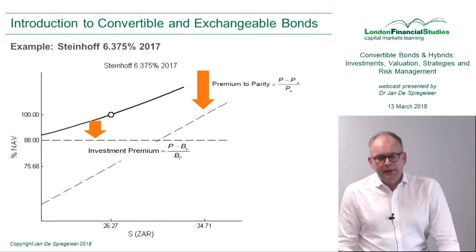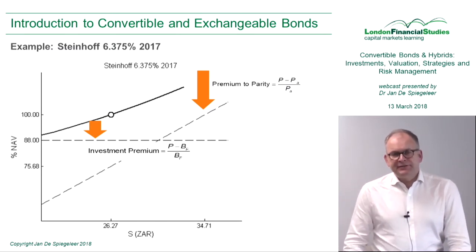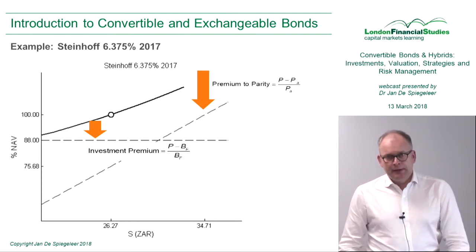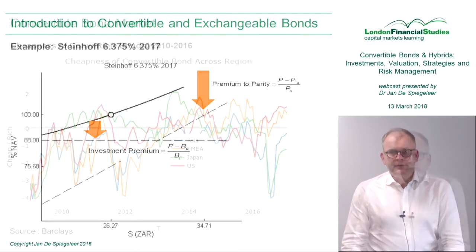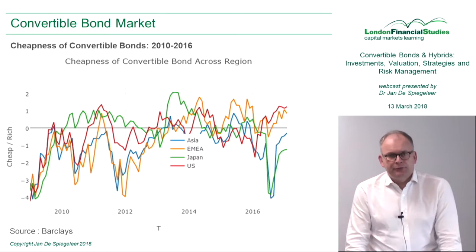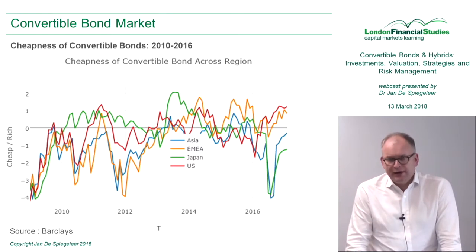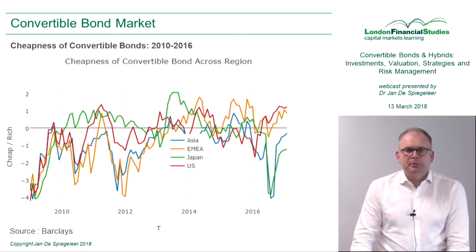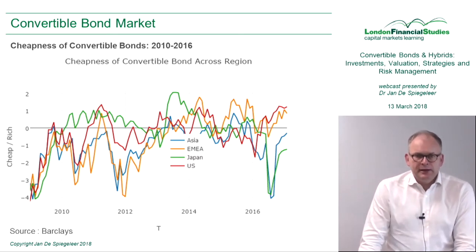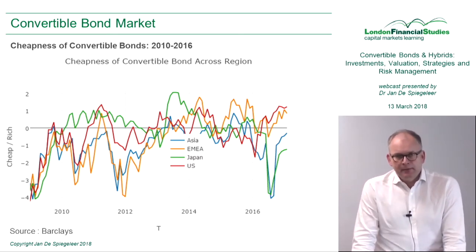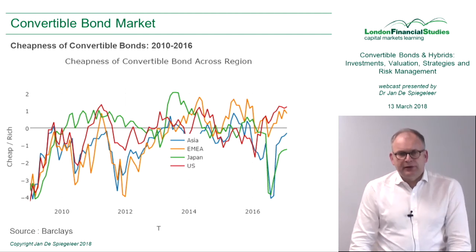A convertible bond is an asset class where you use a lot of terms. We showed you the valuation — the price line — which has a lower boundary called the bond floor and another lower boundary called parity. But it's a theoretical price.